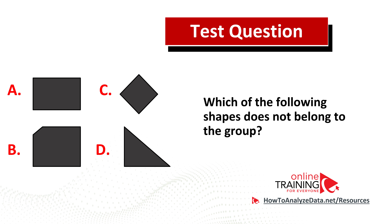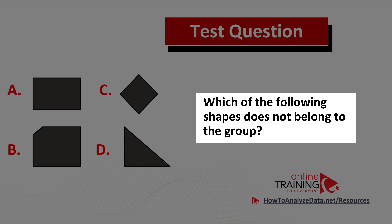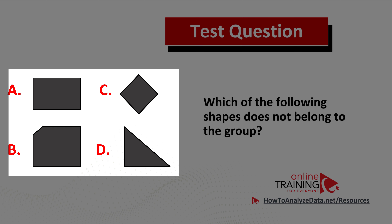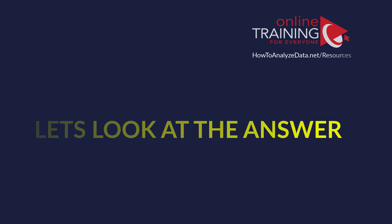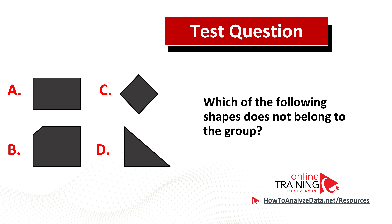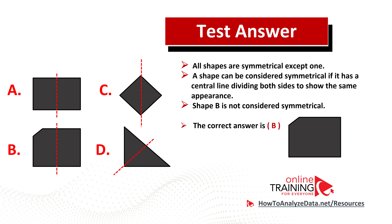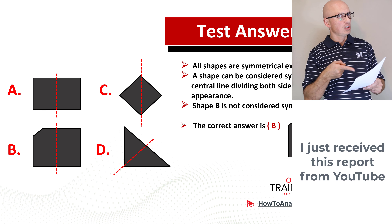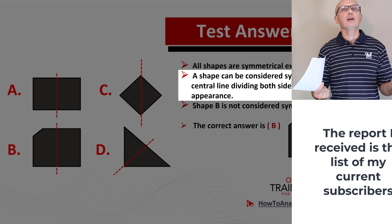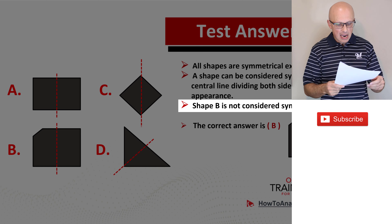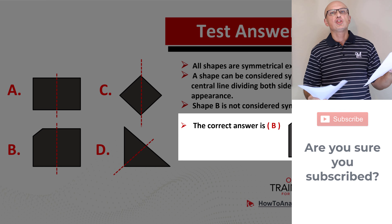Let's look at another interesting question from the real test. Which of the following shapes does not belong to the group? You have four choices — A, B, C, and D. Give yourself about 20 seconds to think. The key similarity to look for is symmetry. A shape is symmetrical if it has a central line dividing both sides to show the same appearance. Shape B is not symmetrical, so the correct choice is choice B.